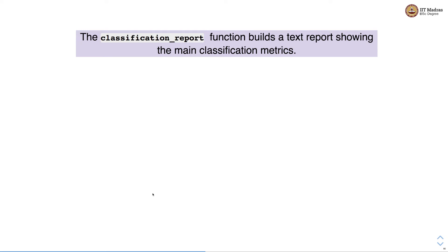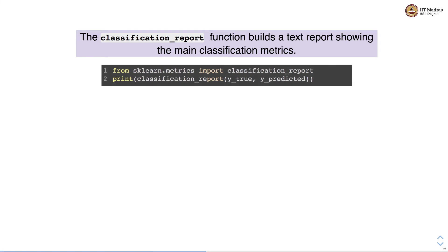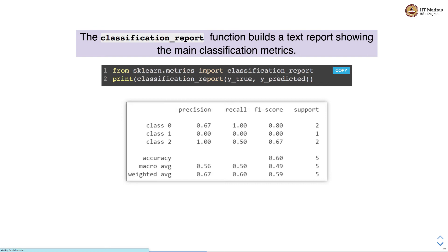The classification_report utility builds a text report showing the main classification metrics. It is implemented in sklearn.metrics and takes the actual labels and predicted labels, producing a report with precision, recall, and F1 score by class label. It also includes overall accuracy as well as macro and weighted averages. We will look at what macro, micro, and weighted averages mean in the subsequent slides.